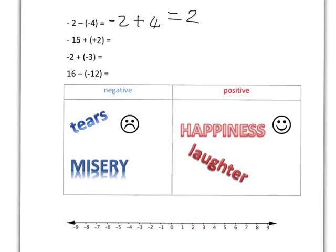In the next one, we are adding positive stuff — that's just adding. We're at negative 15 and we add on 2. I don't have negative 15 on my number line, but I can picture it: if I'm at negative 15 and I take 2 steps up, I'm going to end up at negative 13.